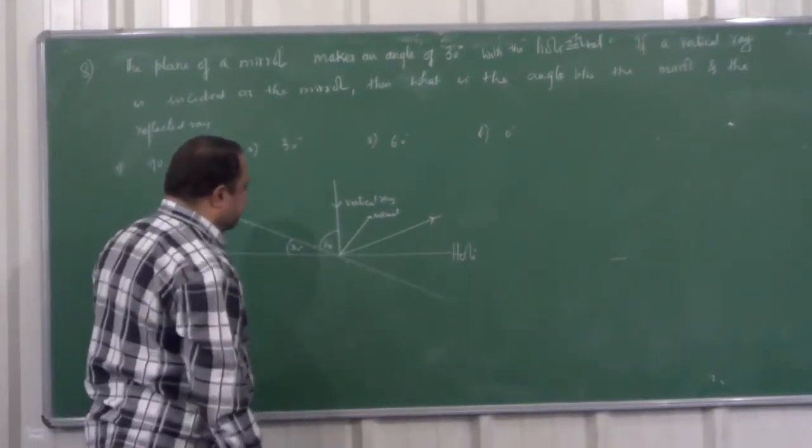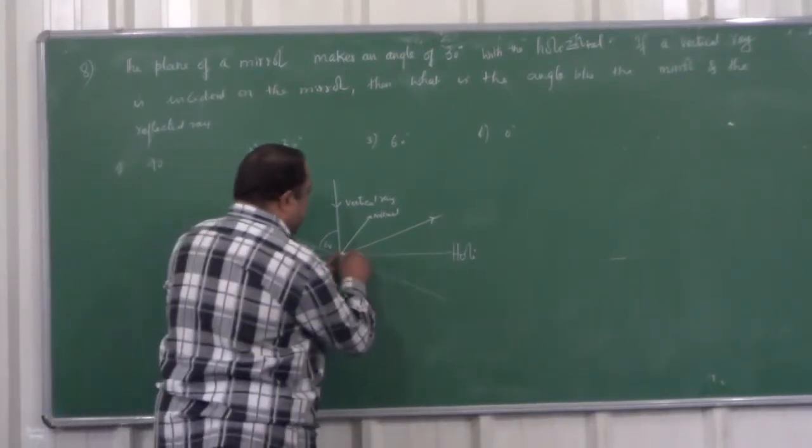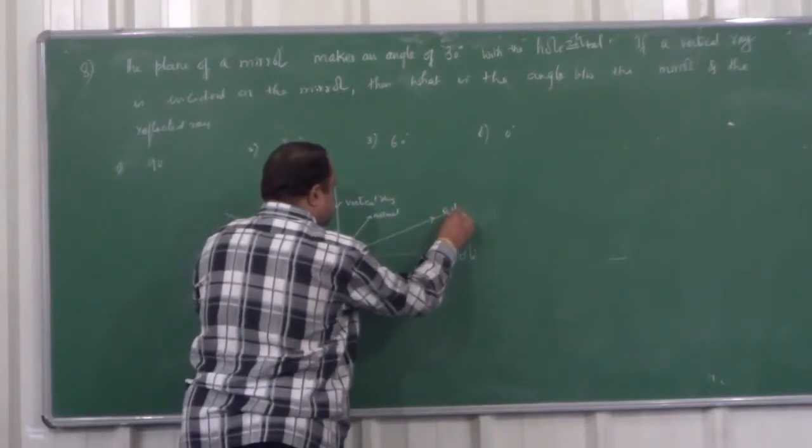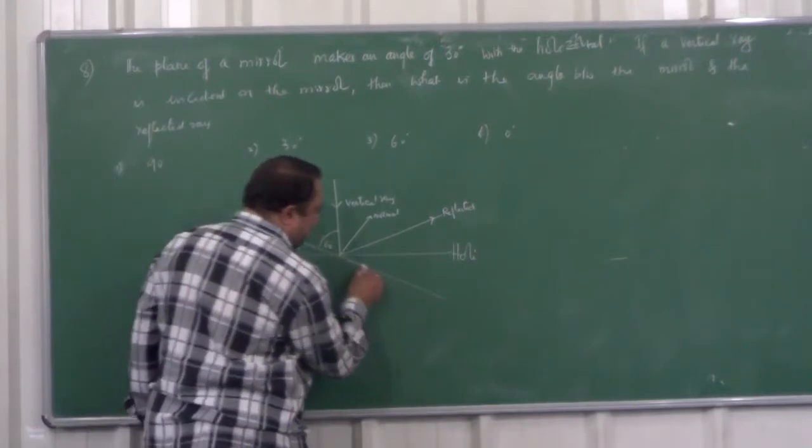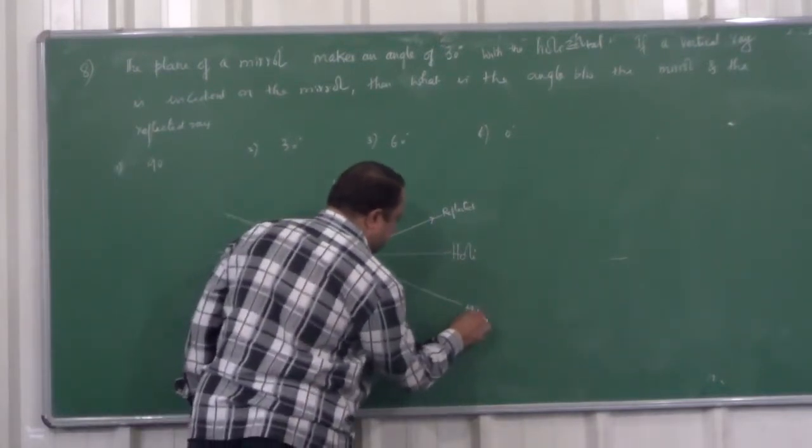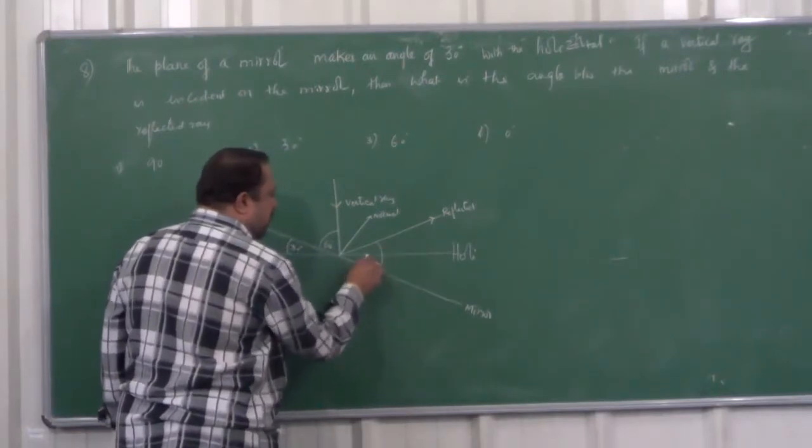Then, what is the angle between the reflected ray? This is, what ray is this? Reflected ray. So, this is the mirror. So, angle between the reflected ray and the mirror will be equal to 60 degrees.